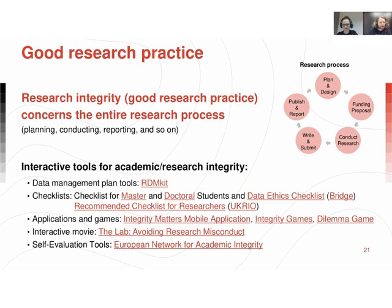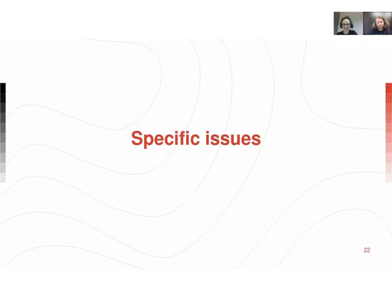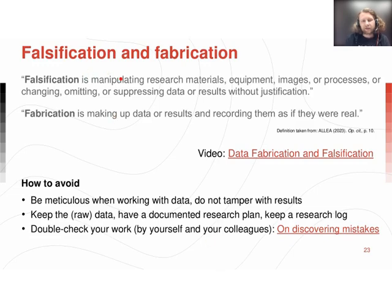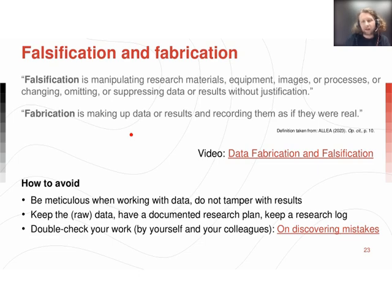After good research practice, we come to bad research practice and examples of such. I'm going to start with the most common and possibly most serious issues in science: falsification and fabrication. Falsification is basically manipulating any part of the research so it fits the author's purposes. Fabrication, on the other hand, is quite similar, but instead of manipulation it involves completely inventing data so it fits the author's purposes. Obviously, these can happen on purpose.